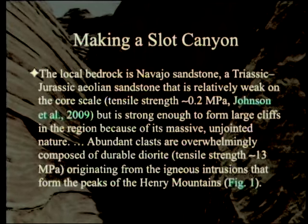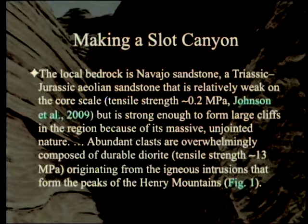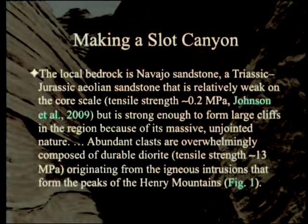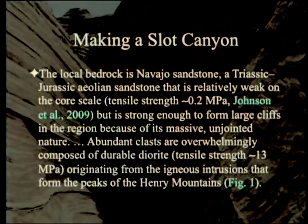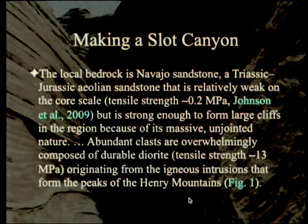Abundant clasts are overwhelmingly composed of durable diorites — considerably stronger material — originating from the igneous intrusions that form the peaks of the Henry Mountains. Officials at the Utah Department of Transportation found no records of when the culvert and channel diversion were constructed. Maps from 1965 and 1970 do not show this highway, but a 1972 map does, so they assume Highway 276 and the culvert were constructed around 1970, meaning the incision has taken place over about 25 years.